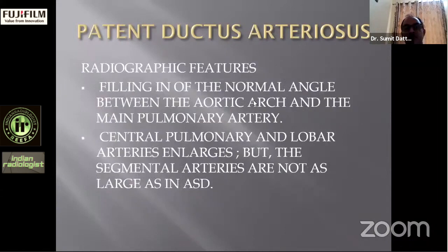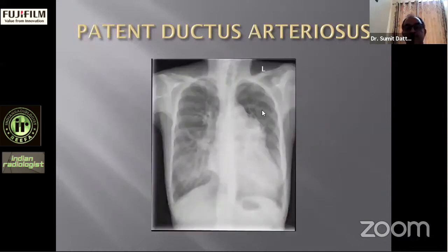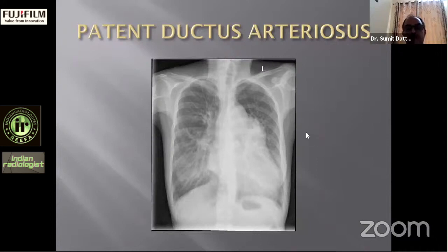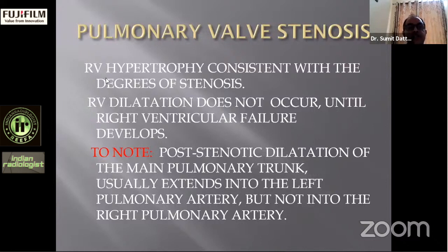The radiological features of PDA include filling of the normal angle between the aortic arch and the main pulmonary artery. The central pulmonary artery and lobar arteries enlarge, but the segmental arteries are not as large as in ASD. We can see vivid pulmonary plethora, enlarged lungs, and a dilated left main pulmonary artery forming a prominent pulmonary bay. Post-stenotic dilatation of the main pulmonary trunk usually extends into the left pulmonary artery but not the right pulmonary artery.